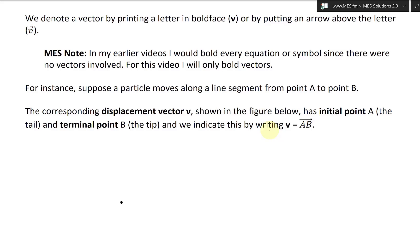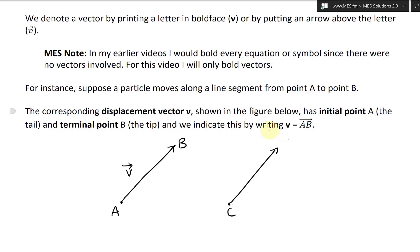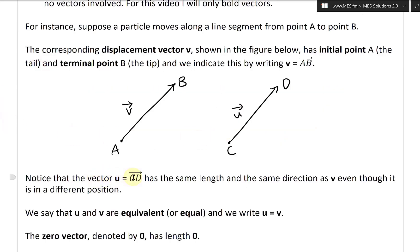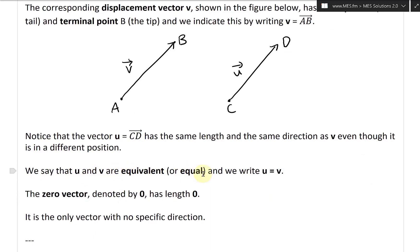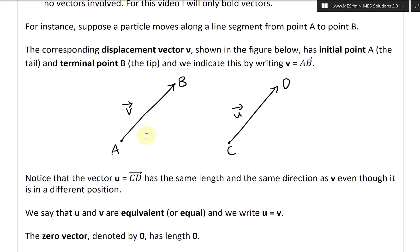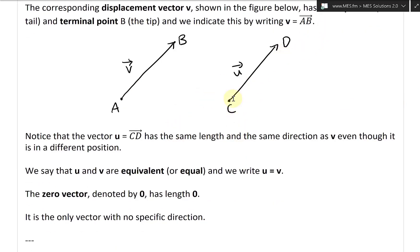So let's say you have point A and point B, with an arrow going from A to B — this is vector V, with an arrow on top. I'm also going to add another vector going from C to D, exactly the same setup, parallel to the first. We'll call this vector U. Notice that vector U equals CD has the same length and the same direction as V. Even though it is in a different position, we say that U and V are equivalent or equal, and we write U equals V. They are the same arrow — same magnitude and same direction.